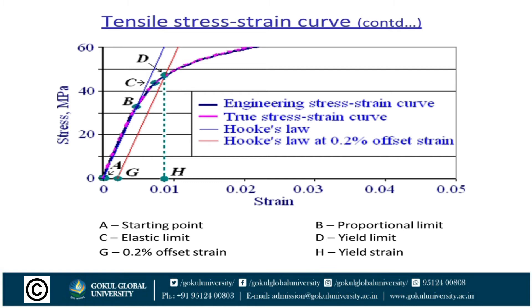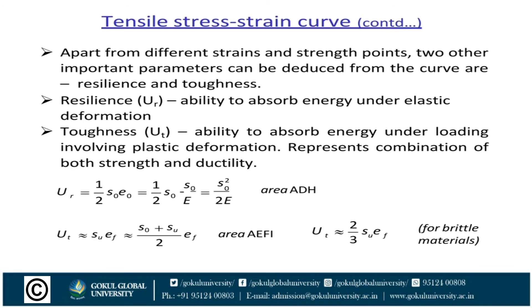Point A is the proportional limit, which represents Hooke's Law. After point B, you have the elastic limit. C is the upper yield point and D is the lower yield point. After that, E is the ultimate stress and F is the fracture (breaking) point. These different stress and strain points can all be defined from the stress-strain curve.